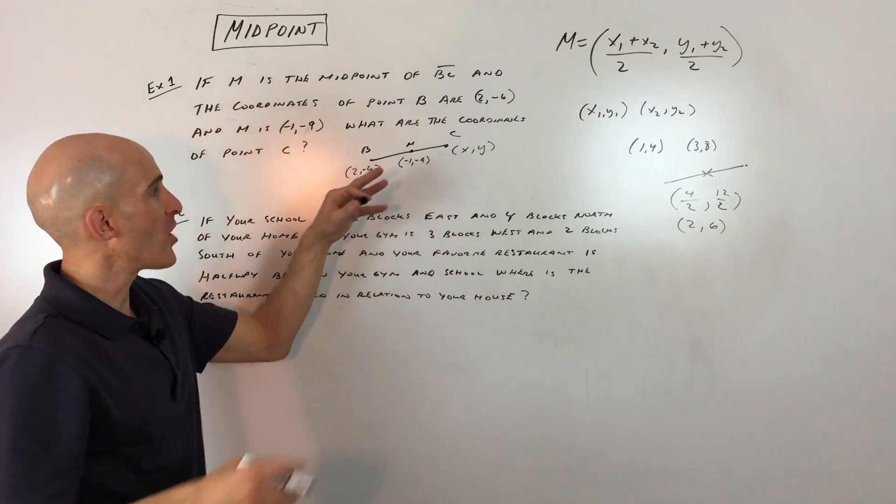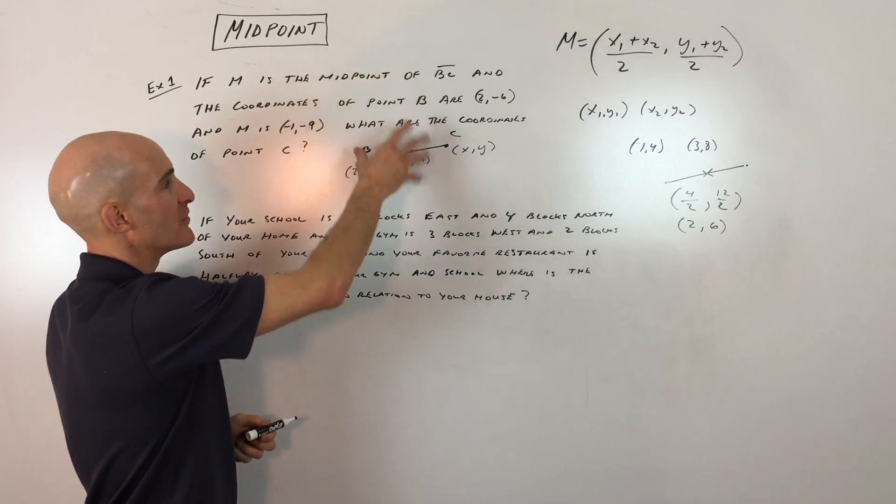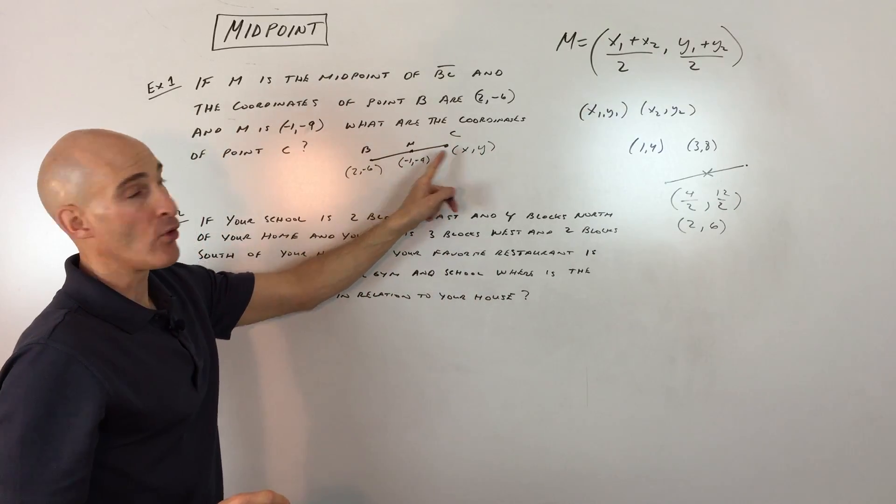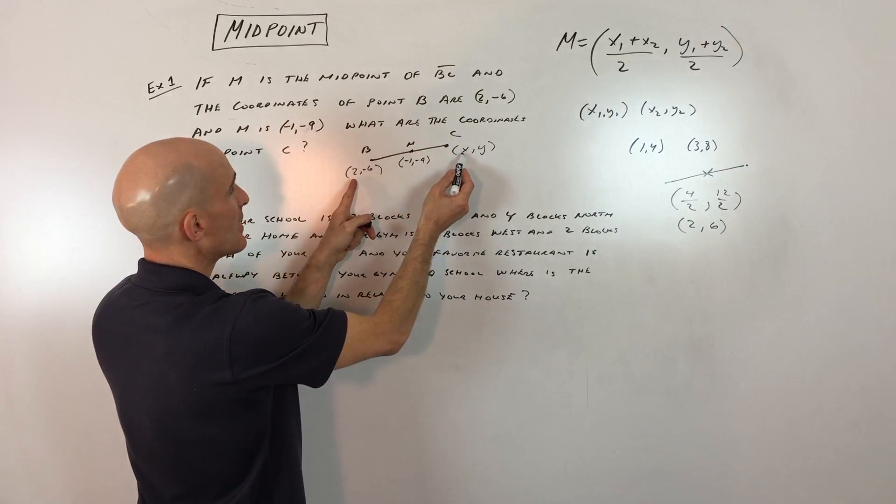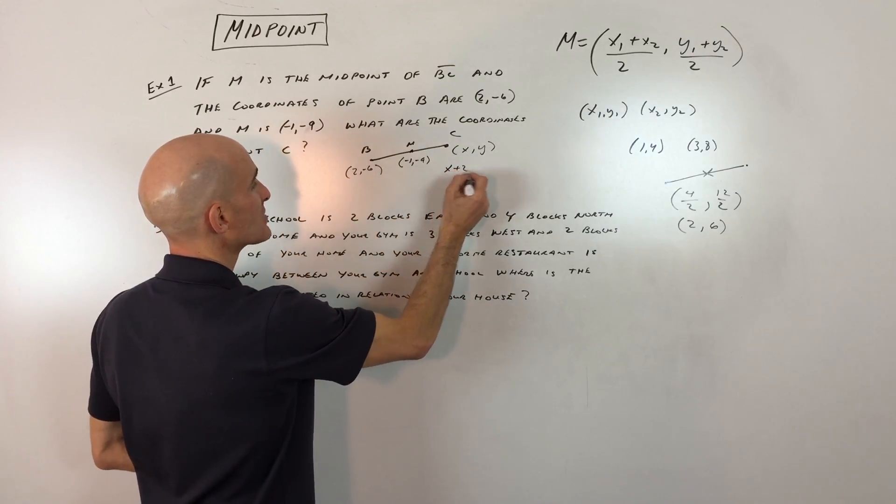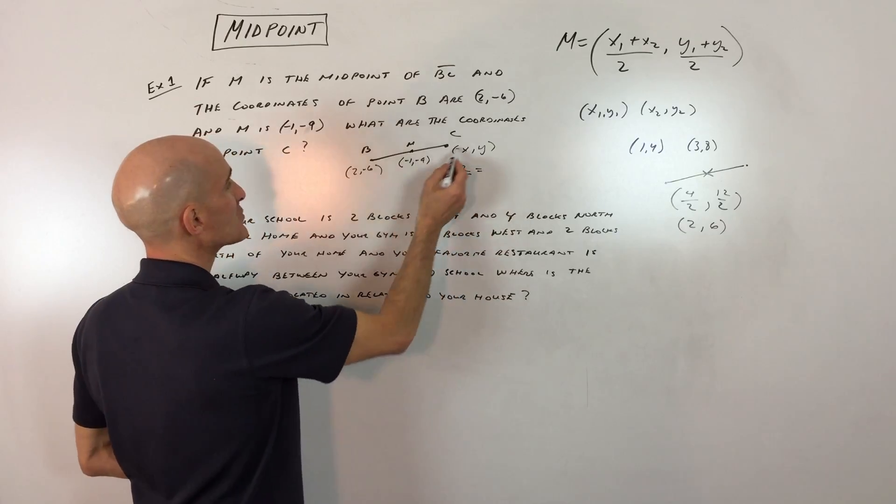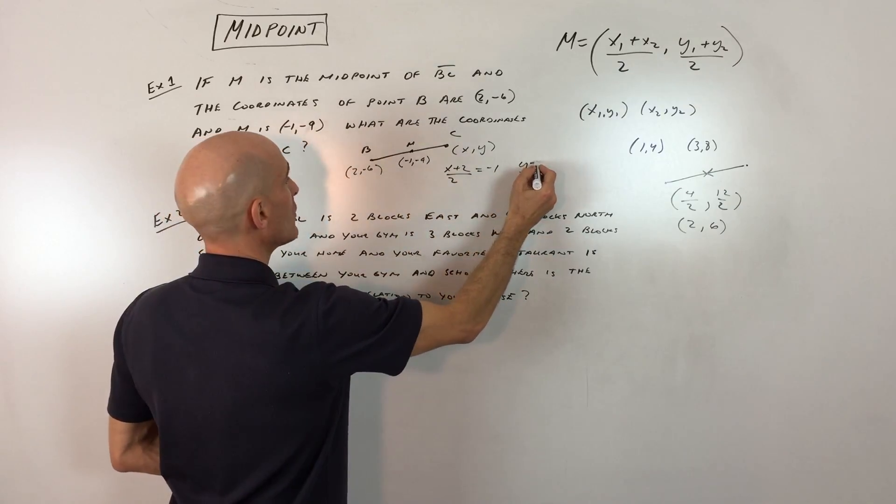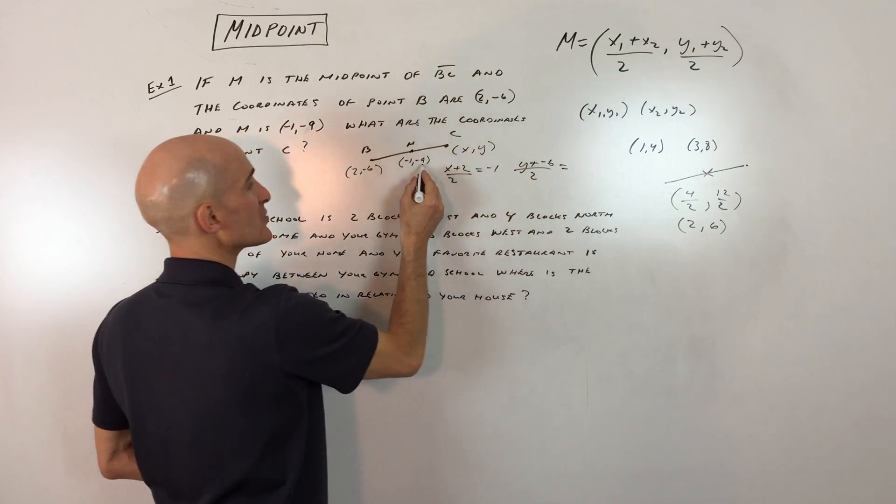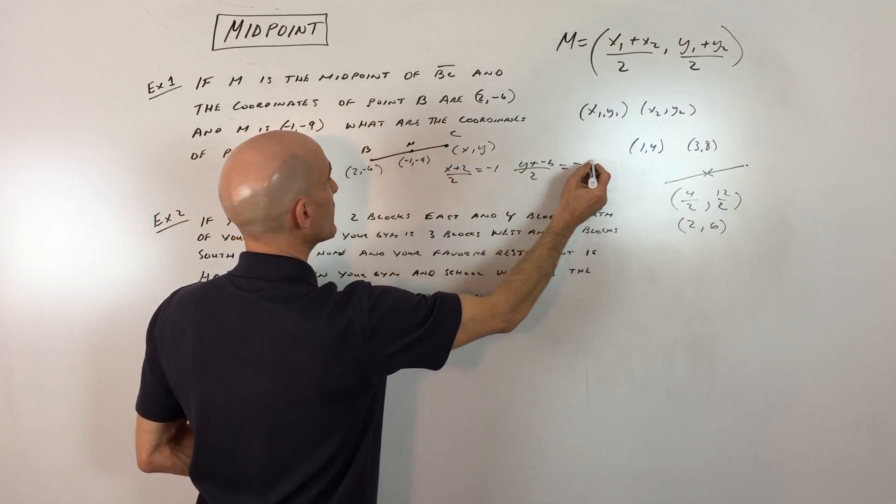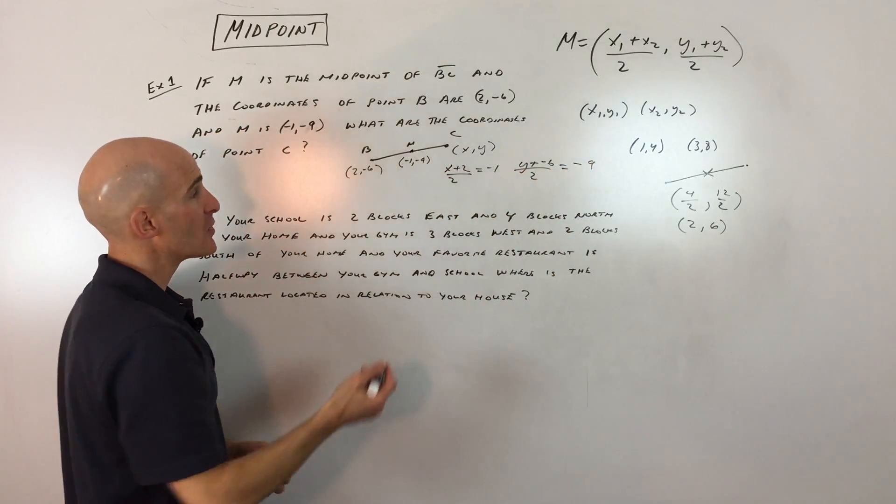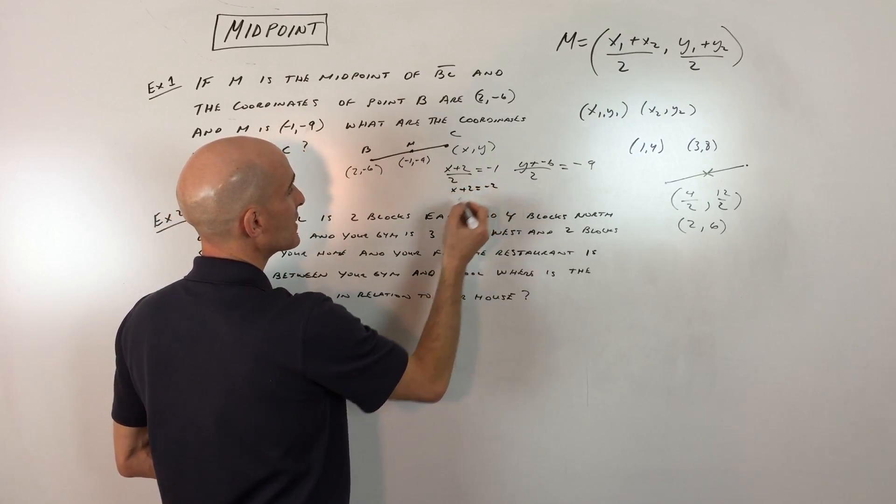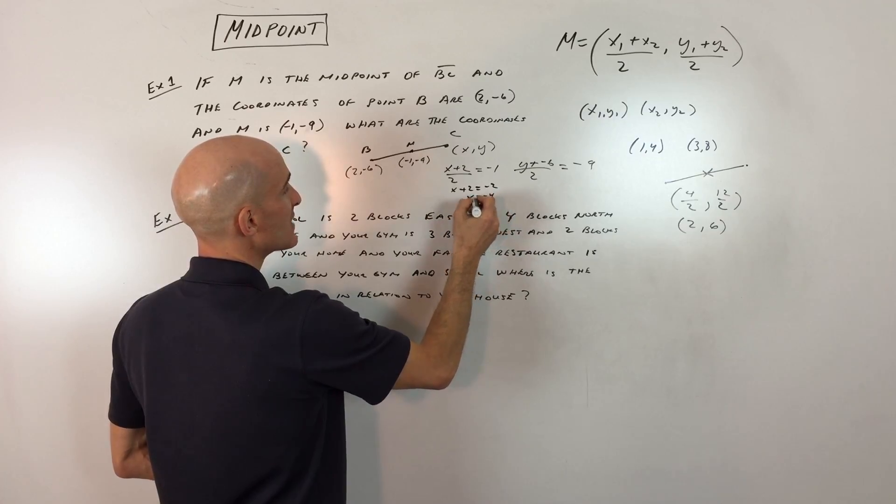We know the midpoint but we don't know the endpoint. So what you would do is add the two endpoints together. We'd say X plus 2 divided by 2, so the average of the X's equals negative 1. And then the average of the Y's, Y plus negative 6 divided by 2 equals the Y coordinate of the midpoint. All you have to do then is solve these mini equations by multiplying both sides by 2. So that's X plus 2 equals negative 2. Subtract 2 from both sides, you get X equals negative 4.